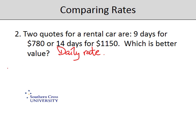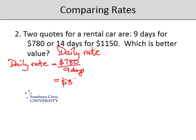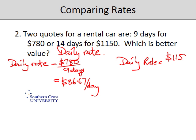Based on the nine-day option, the daily rate is $780 over 9 days, which comes out at $86.67 per day. The other daily rate is $1,150 for 14 days, which comes out to $82.14 per day.